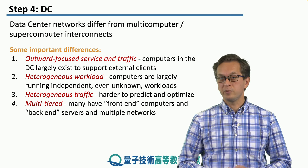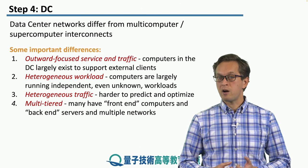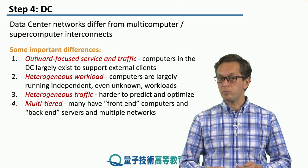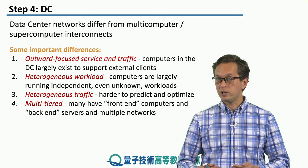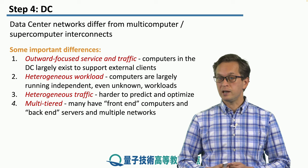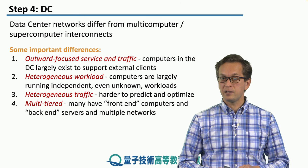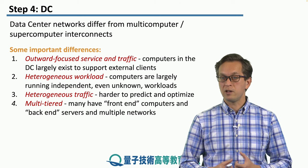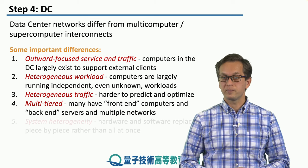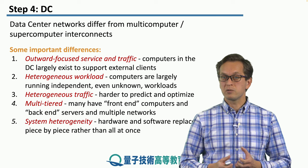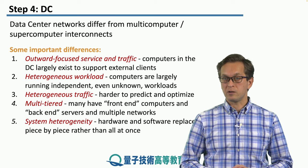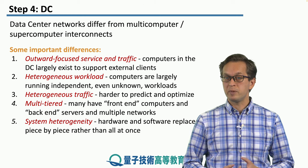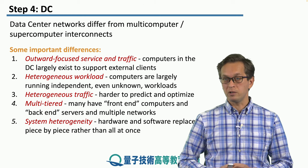Often, quantum data center networks are multi-tiered. There is a front-end of servers or computers which communicates through the quantum internet with the clients, and then this front-end communicates with the back-end servers that are actually carrying out the workload. There is also system heterogeneity: hardware and software are replaced piece by piece, rather than the whole thing all at once.